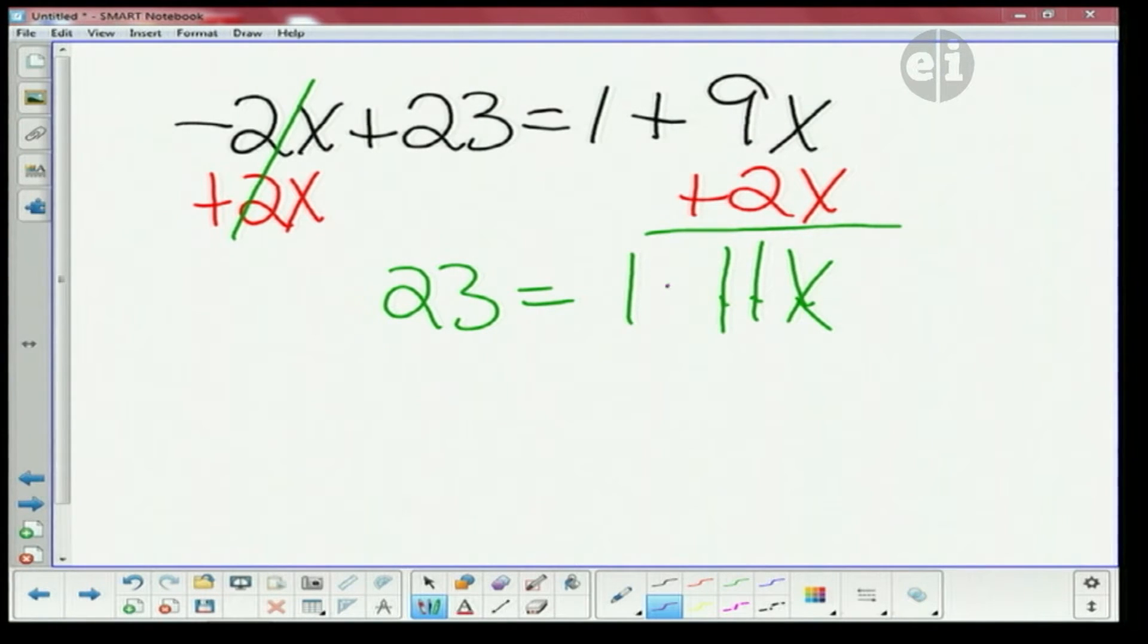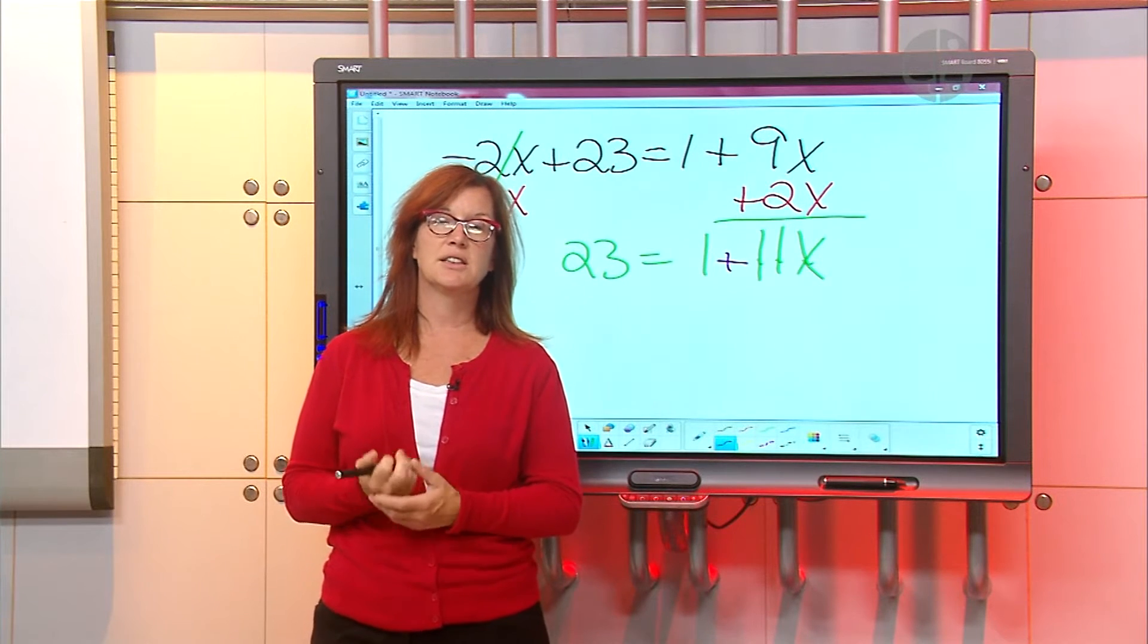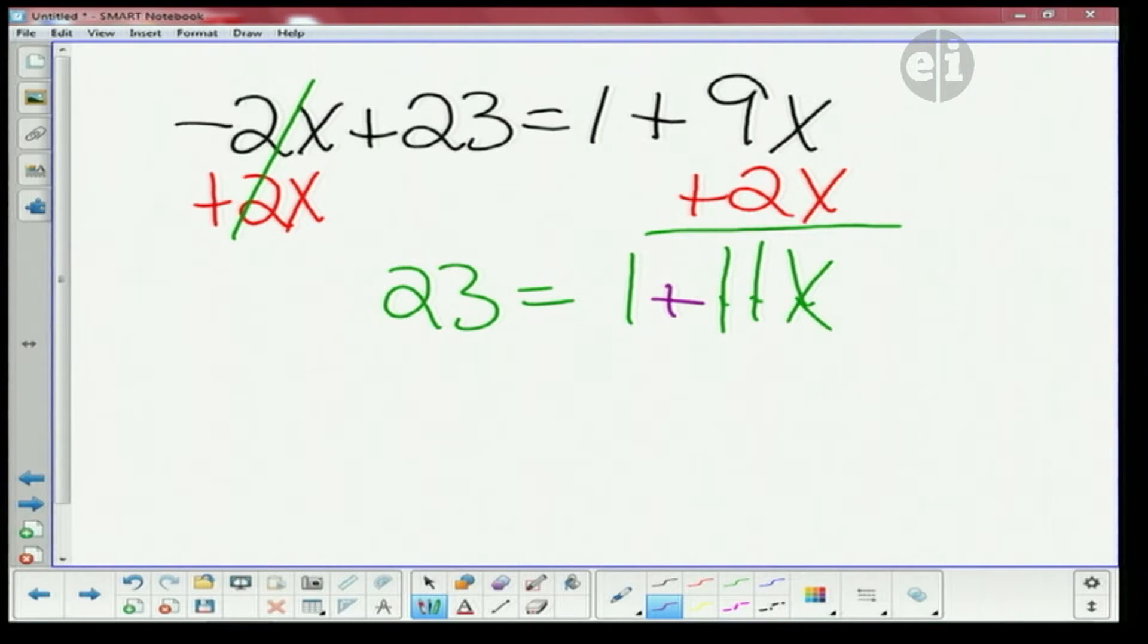Okay, so we're gonna bring everything down. We got 23 is equal to 1 plus 11x. Nice job. All right, what are we gonna do next? You're going to subtract 23 from both sides.